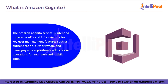The Amazon Cognito service is intended to provide APIs and infrastructure for key user management features such as authentication, authorization, and managing users' repositories with various operations from your web and mobile app. It has two main components: user pool and identity pool. User pools provide sign-up and sign-in options for your app users and act as user directories. Identity pools offer access to other AWS services like AWS S3 and AWS DynamoDB.